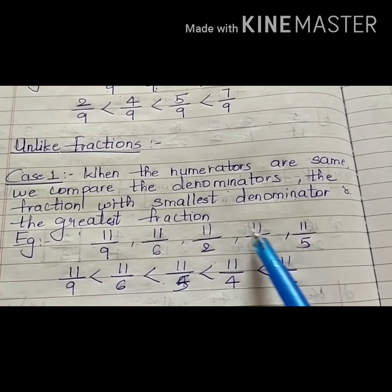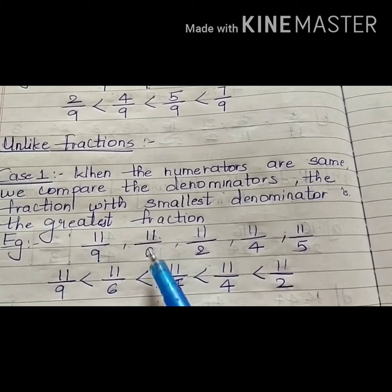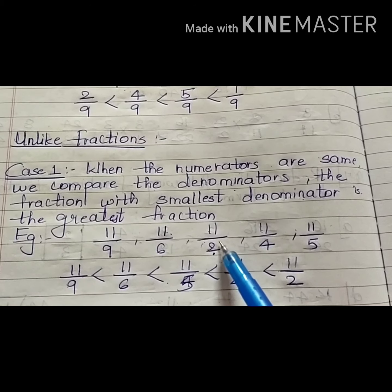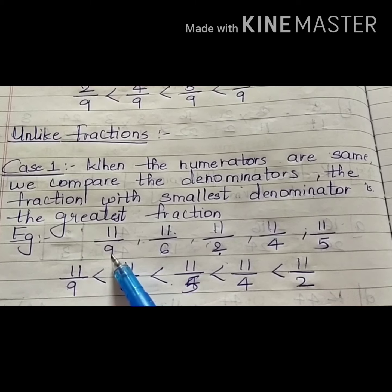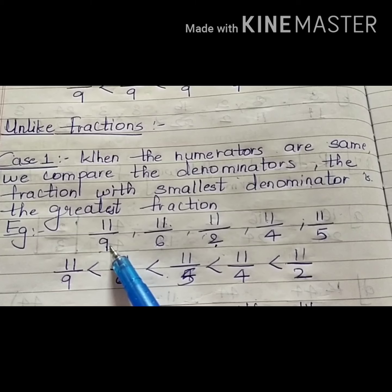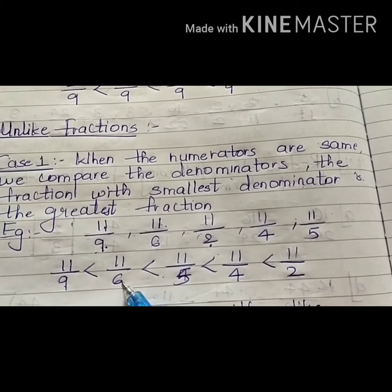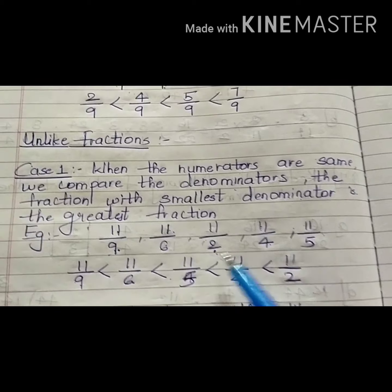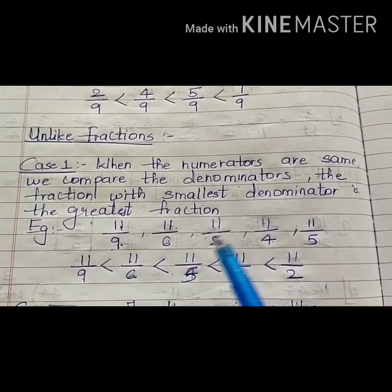When all the numerator numbers are the same, you have to observe the denominator, but remember it is opposite — smaller the denominator, bigger is the fraction. So the bigger denominator gives the smallest fraction. Among these denominators, 9 is the biggest, so 11 upon 9 is the smallest, then 11 upon 6, 11 upon 5, 11 upon 4, and 11 upon 2.